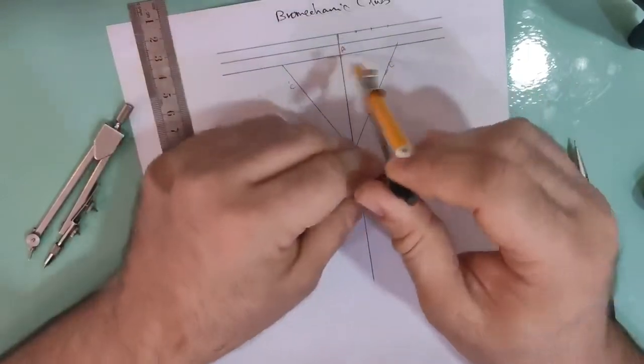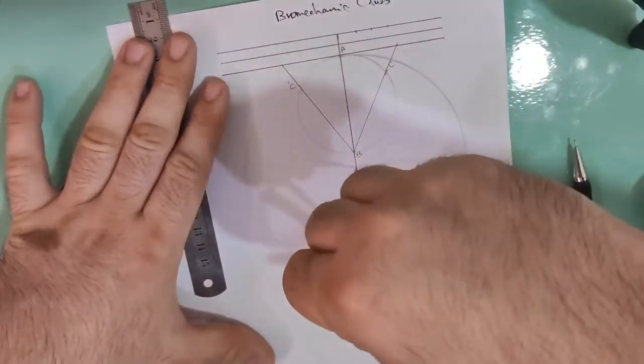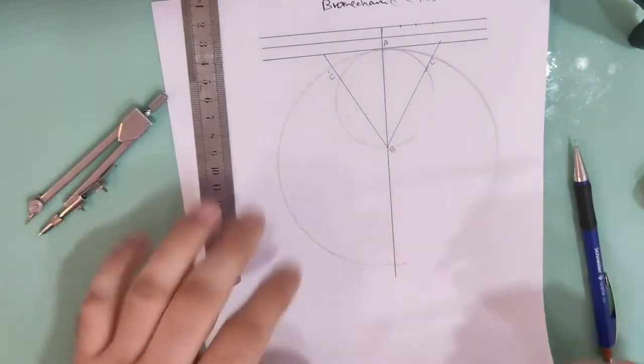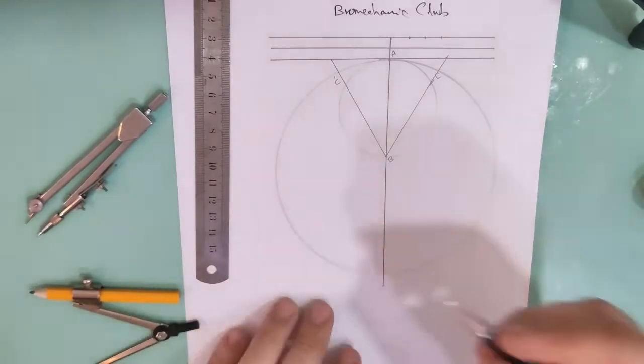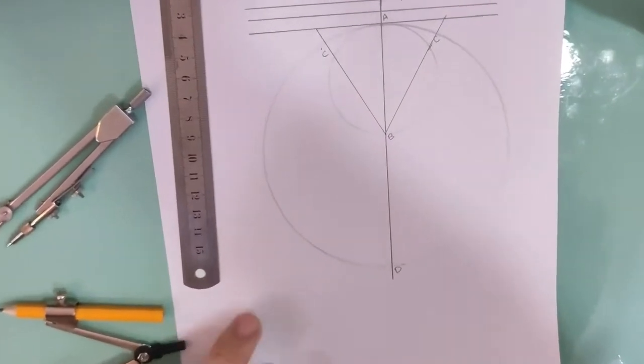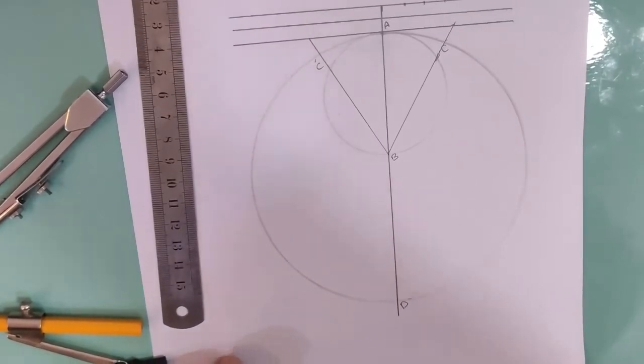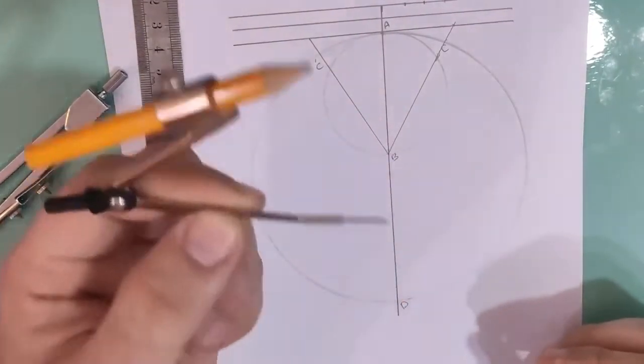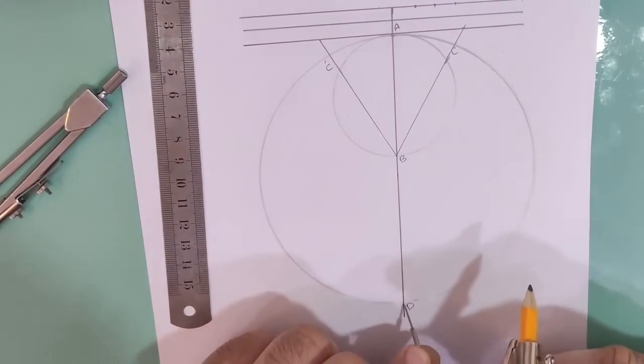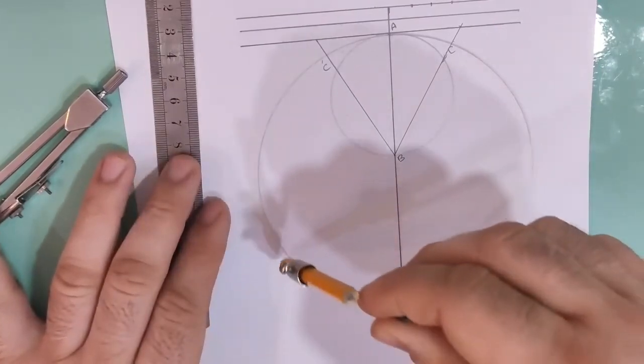I'm gonna draw it again to be clear. Here we go. D point. I will zoom it. Using the same radius, we put this head on D and intersect the second circle with this point and this point.